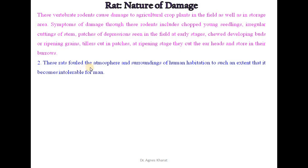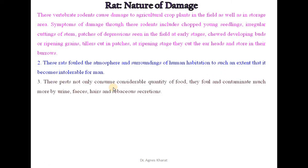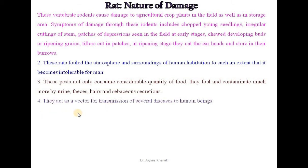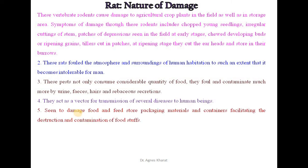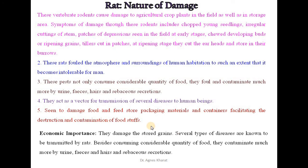These rats foul the atmosphere and surroundings of human habitation to such an extent that it becomes intolerable for man. These pests not only consume considerable quantity of food, they foul and contaminate much more by urine, feces, hairs, and sebaceous secretions. They act as a vector for transmission of several diseases to human beings. They also damage food and feed stored packaging materials and containers, facilitating the destruction and contamination of foodstuffs. Economically, these are important pests.